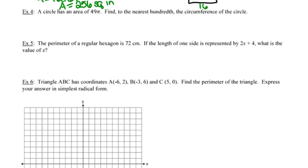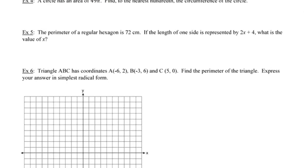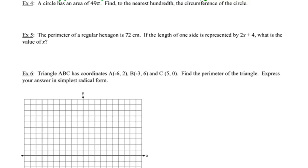Number 4 is a circle problem. The area of the circle is 49π, and we want to find the circumference to the nearest hundredth. On the formula sheet, circumference equals 2πr or π times the diameter. To use either formula, I need the radius or diameter. Since I only know the area, I'll use the area formula: A equals π times r squared.